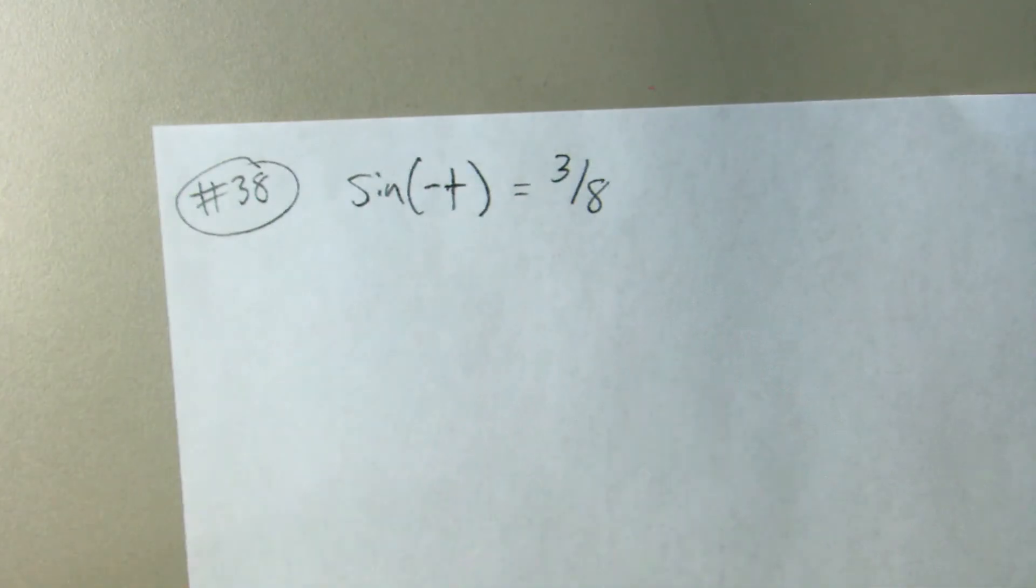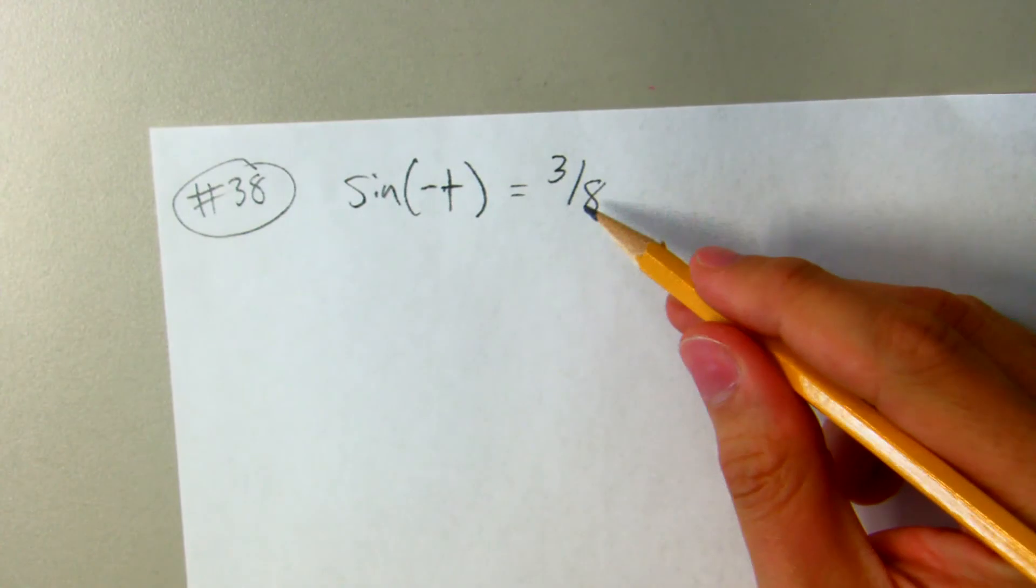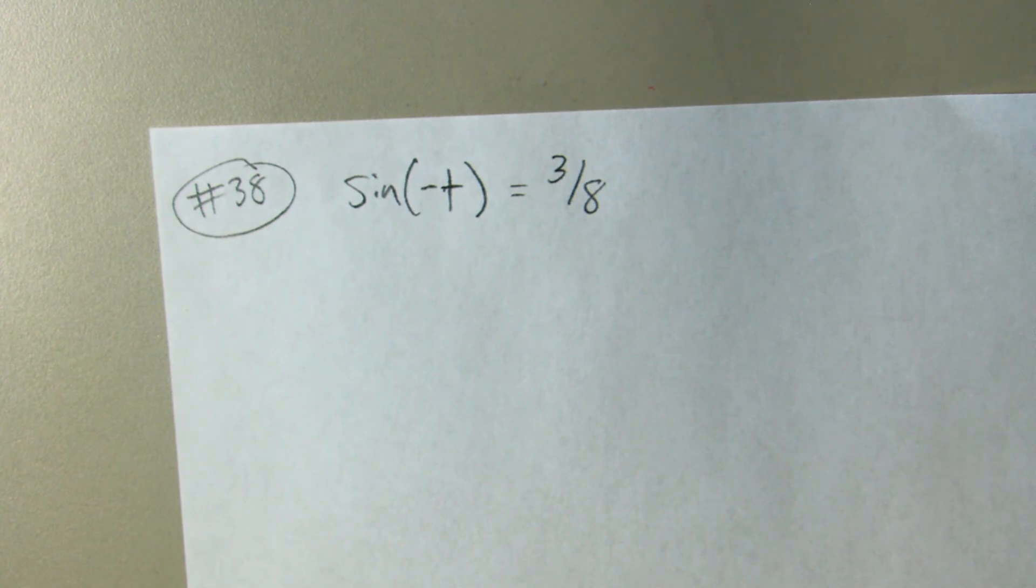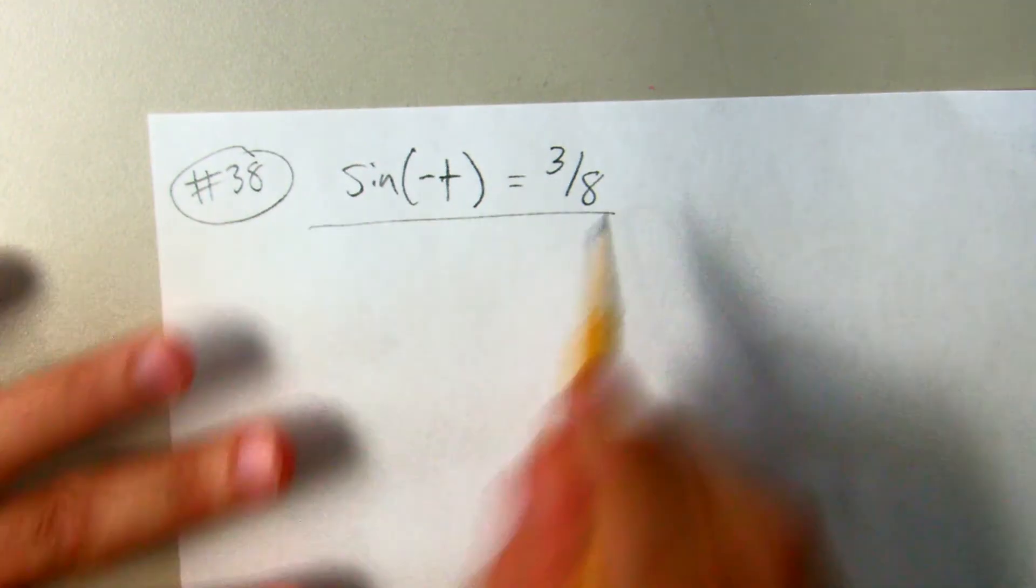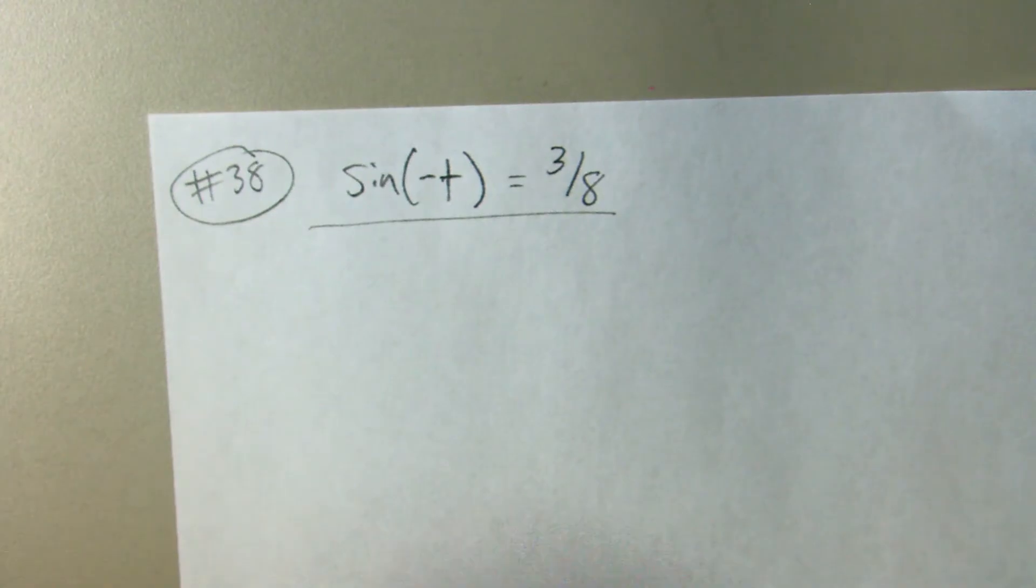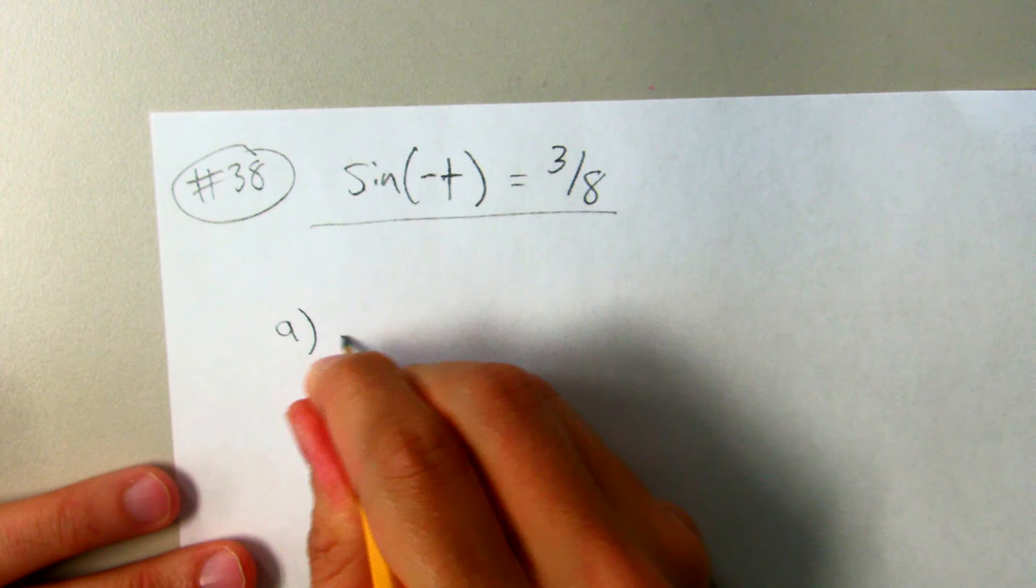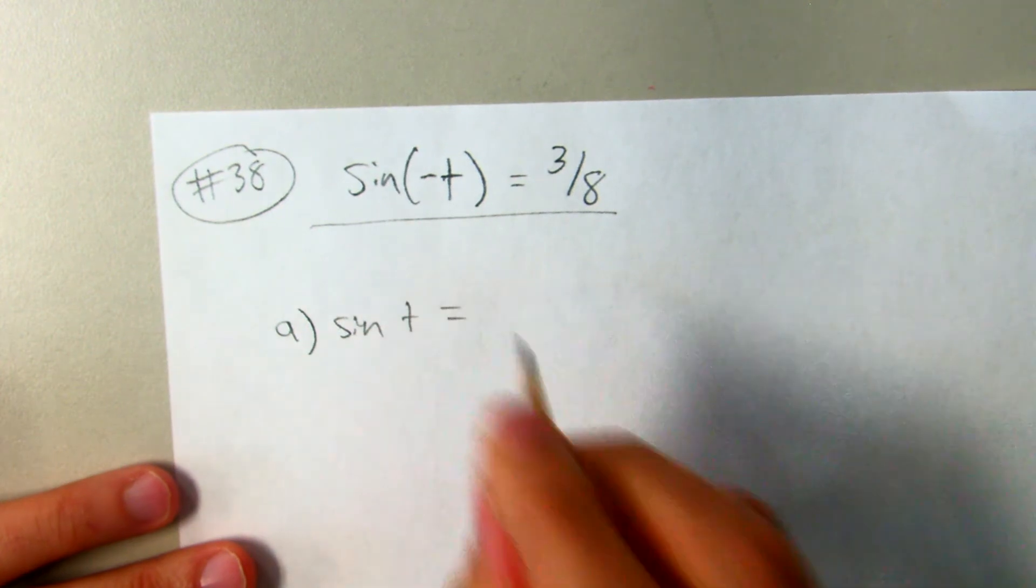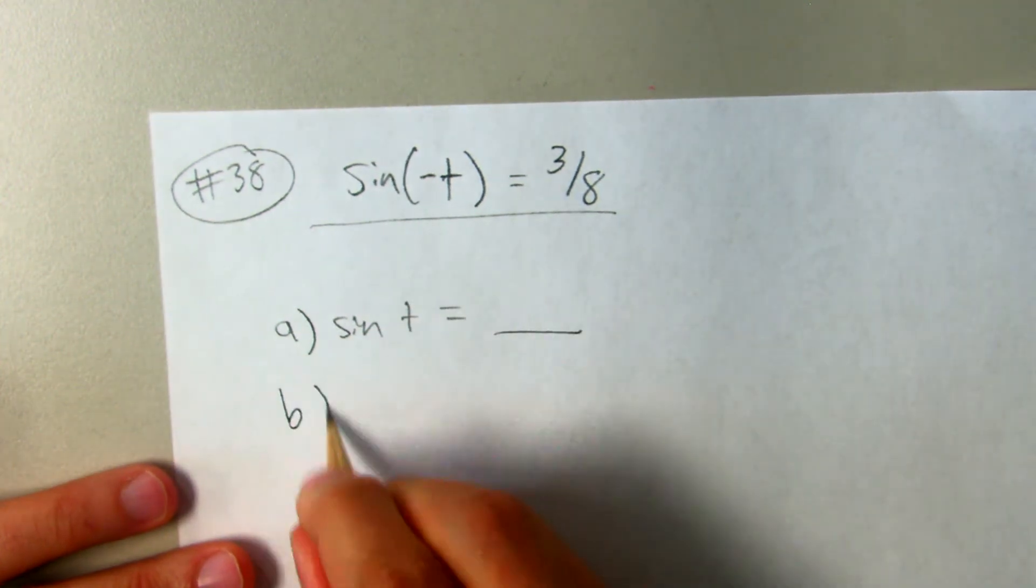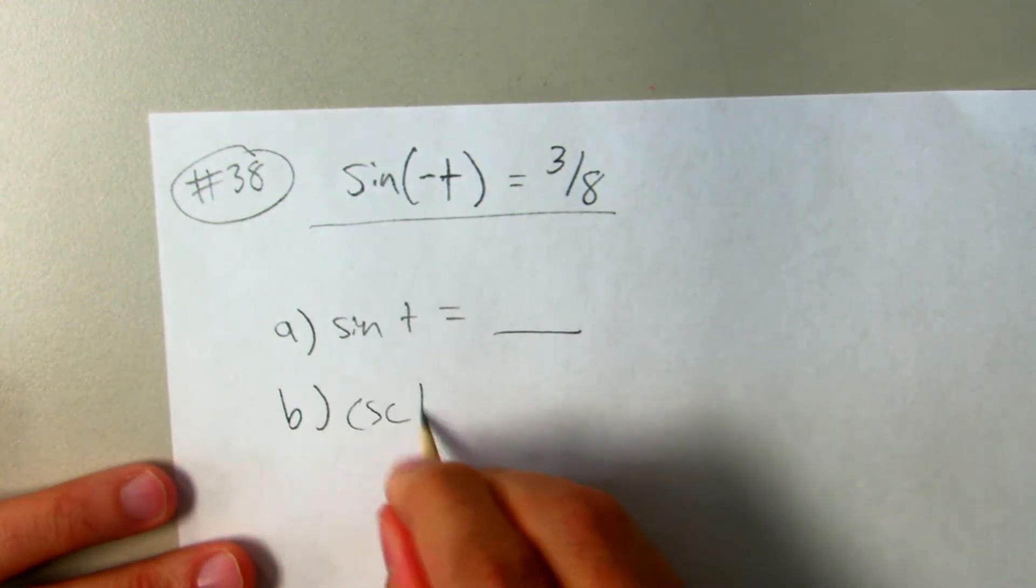The unit circle doesn't, or we at least don't memorize the ratios of 3/8. Somewhere in the unit circle I have a value of 3/8, but I don't have that memorized. But this is the information they're giving to us, and that's enough information for us to figure out the sine of t and the cosine of t.